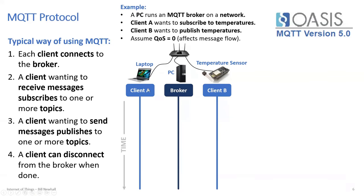Client A sends a connection control packet to the broker. The broker acknowledges and sends back a connection acknowledgement, so Client A knows it has established a connection and can now subscribe and publish. Client B does the same — it sends a connect request, and the broker sends back an acknowledgement. There might be a username and password involved, but the broker says okay, Client B, you can connect.